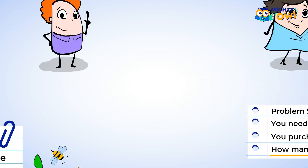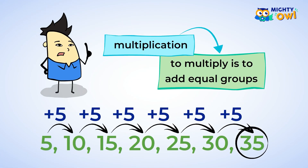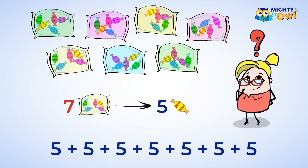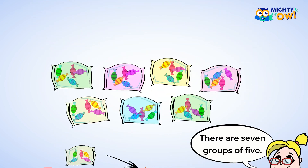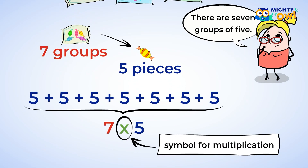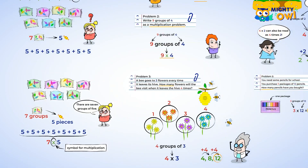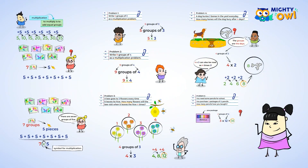Time to sum it up. Multiplication is having equal groups. It's a great way to add the same number up quickly. In other words, multiplication is a time saver. And the new symbol means multiplication. There are so many more interesting things to learn about multiplication, but we're out of time. See you in the next video lesson.